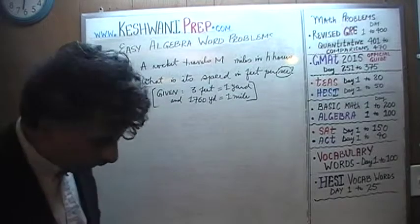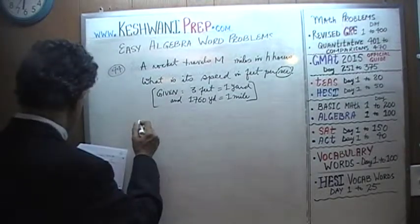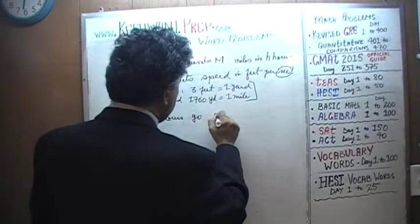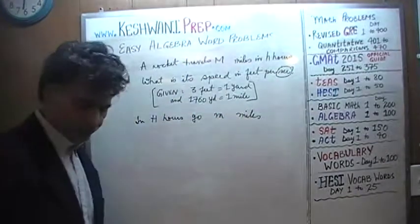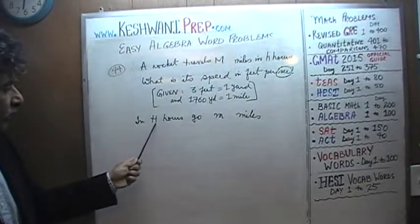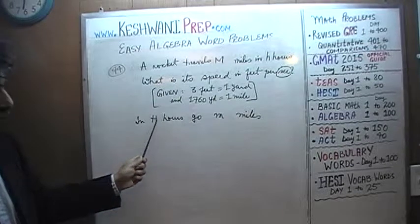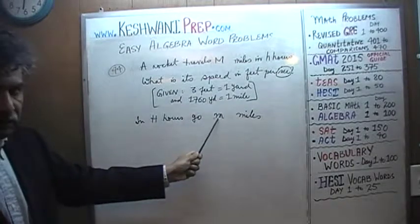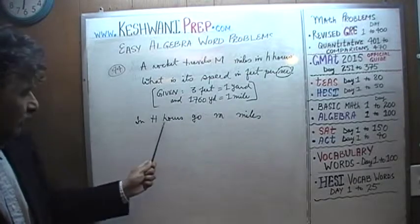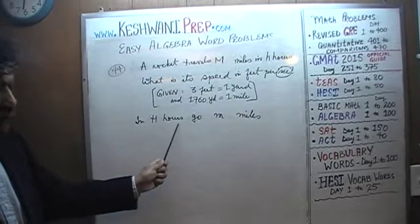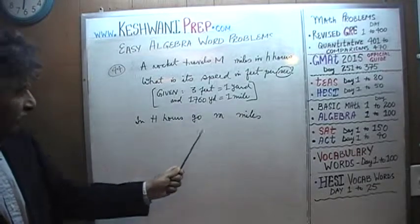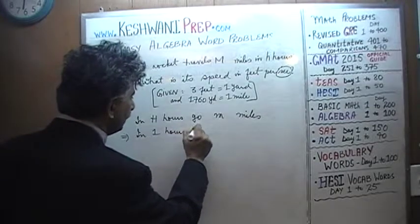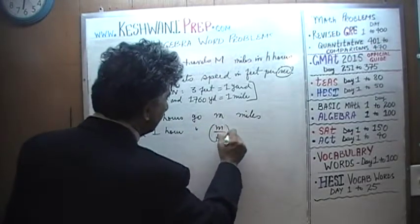We know that in h hours we can go m miles. For example, if in two hours we can go m miles, then in one hour we would be able to go m over two miles — half the distance. If in three hours we can go m miles, then in one hour we go a third of the distance. Since it takes h hours to go m miles, that implies in one hour we can go m over h miles.